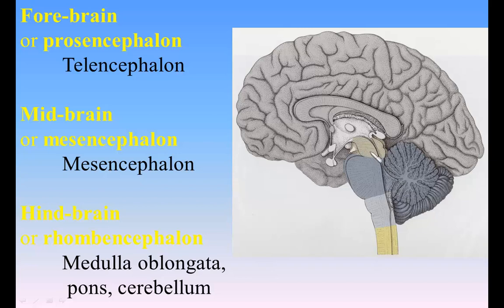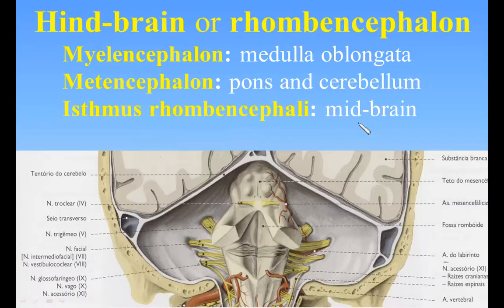The forebrain undergoes great modifications. Its anterior part, or telencephalon, expands laterally in the form of two hollow vesicles, the cavities of which become the lateral ventricles, while the surrounding walls form the cerebral hemispheres and their commissures. The cavity of the posterior part, or diencephalon, forms the greater part of the third ventricle, and from its walls are developed most of the structures which bound that cavity.